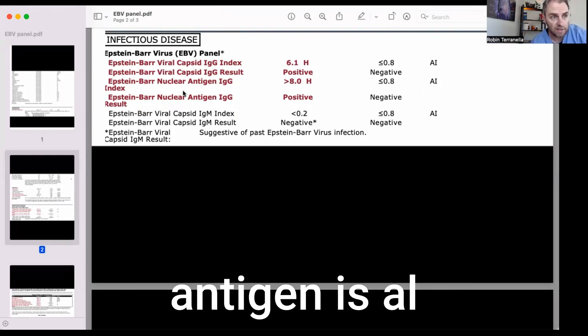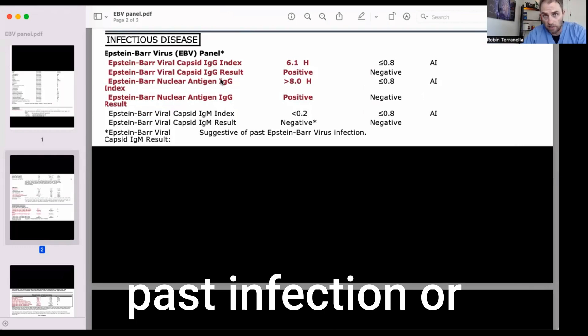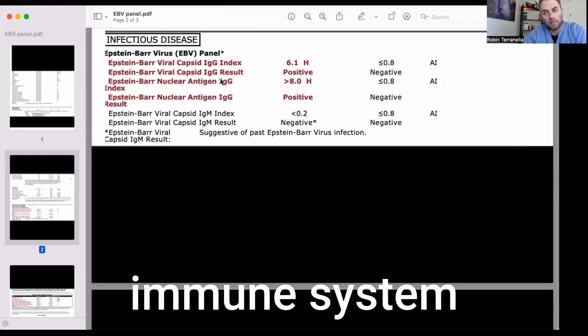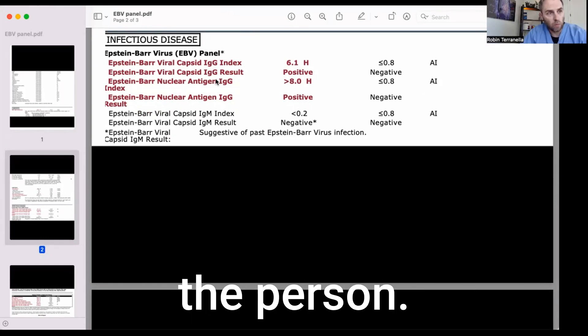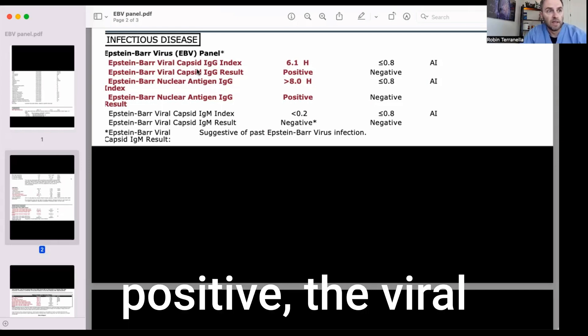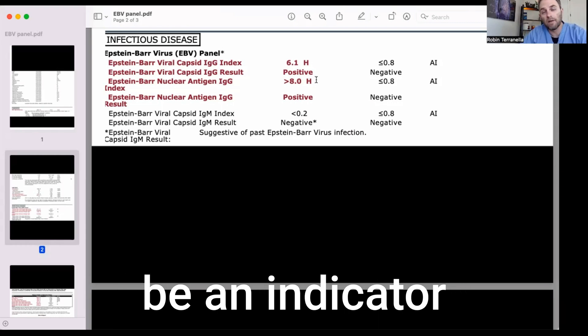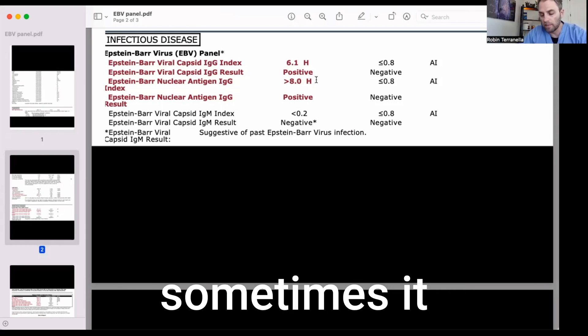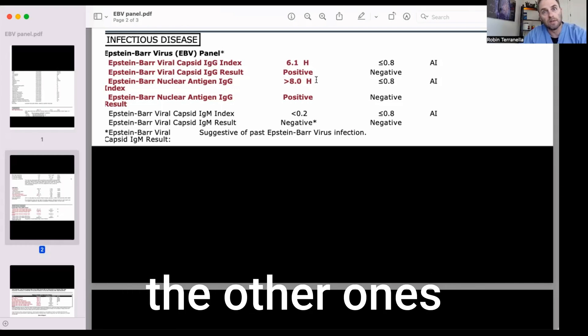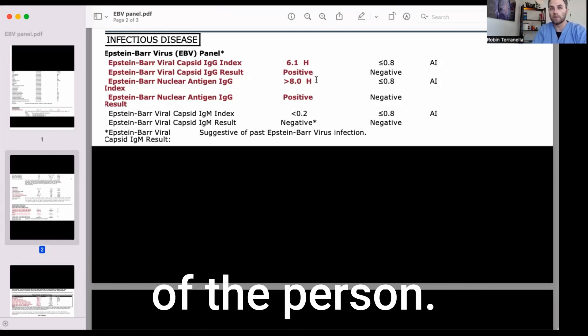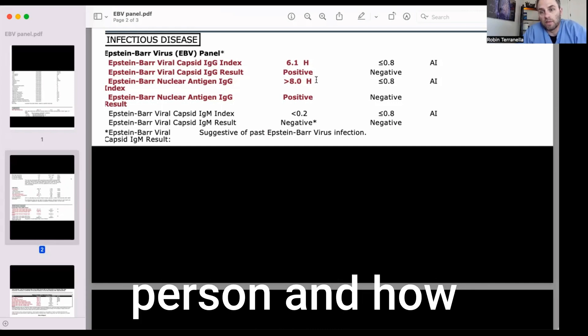Now, the nuclear antigen is almost always, when that's positive, going to be a result of a past infection or latent infection. So you've had the virus, the immune system stamped it off. It's no longer producing symptoms in the person when you just have the nuclear antigen positive. The viral capsid IgG can go either way. Sometimes it can be an indicator of just a past infection simply. Sometimes it could be an indicator of a current infection. How do you know? Well, you check the other ones as well and also interpret it in the context of the person. Sometimes it's simply just a judgment call based on what's going on with the person and how they're presenting.